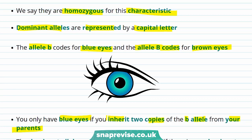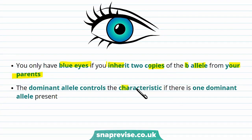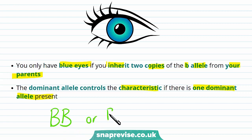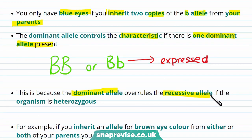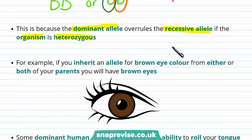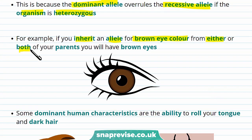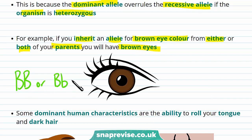You inherit two copies of the recessive allele. If you inherit a dominant allele, it controls the characteristic even if there's only one present. For instance, if you have the genotype BB or Bb, the characteristic is expressed. This is because the dominant allele overrides the recessive allele if the organism is heterozygous. So even though a heterozygous individual inherits a lowercase b or recessive allele, the characteristic is still expressed as it has a capital letter B representing a dominant allele. This means if you inherit an allele for brown eye colour from either or both of your parents, you'll have brown eyes.